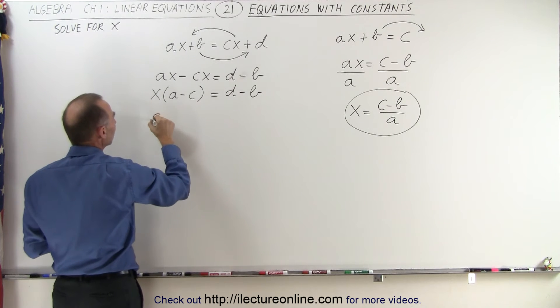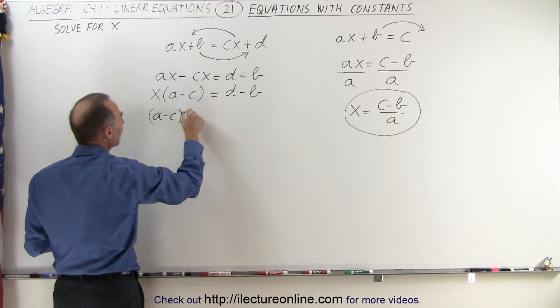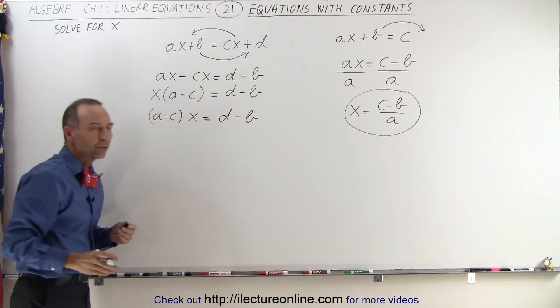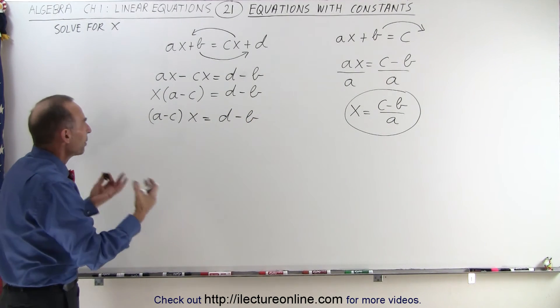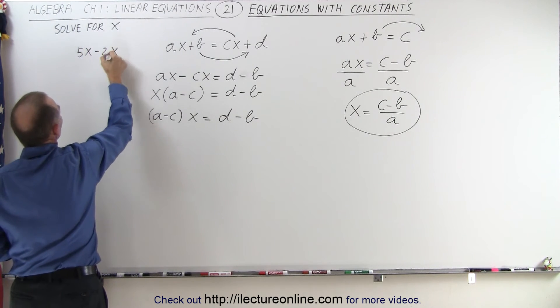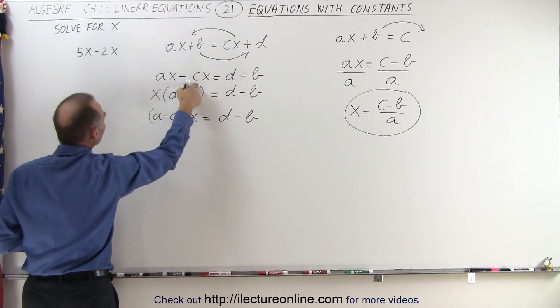We might also want to write it as A minus C times X is equal to D minus B. To see how that works let's compare that if we had numbers. Let's say we have the numbers 5X minus 2X instead of AX minus CX.